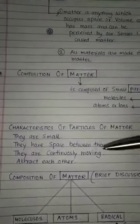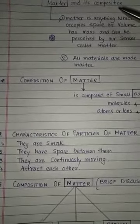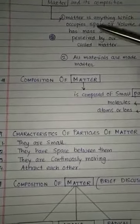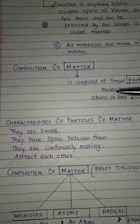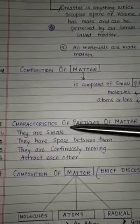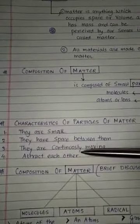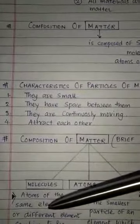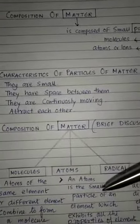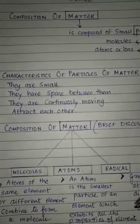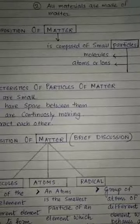In this video we discussed four important points. First, matter is anything that occupies space, volume, and has mass. Second, matter is made up of molecules, atoms, or ions. Their characteristics: they are small, they have space between them, they are continuously moving, and they attract each other. A molecule is formed when atoms of the same or different elements combine. An atom is the smallest particle which exhibits all the properties of an element. And a radical or ion is a group of atoms of different elements which behaves as a single unit.